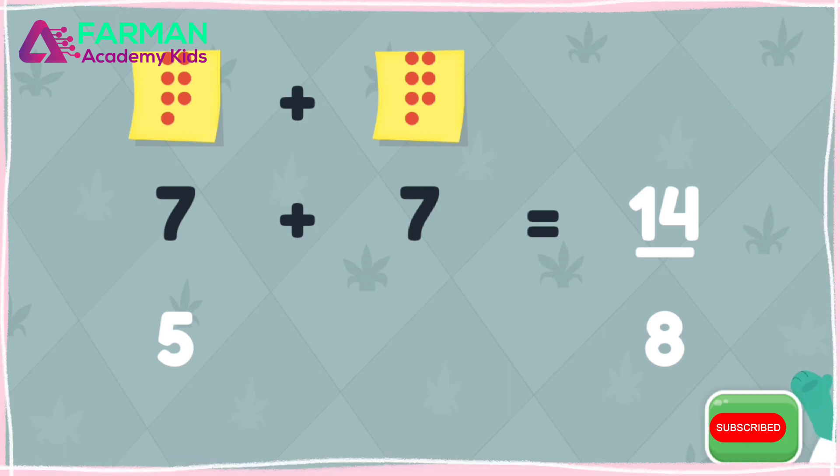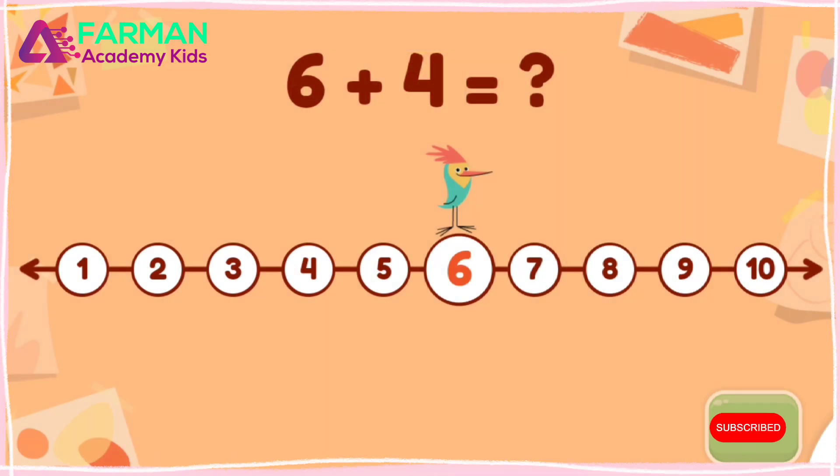Seven plus seven equals fourteen. Use the number line to solve the equation.